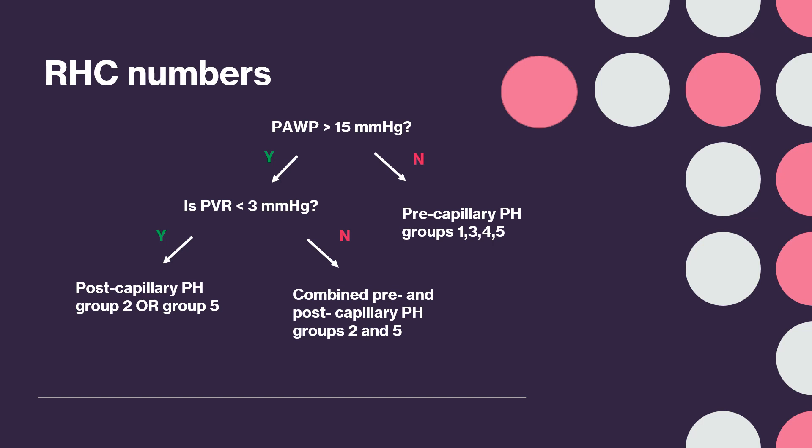If the mean pulmonary arterial pressure is less than 20, you do not have pulmonary hypertension. The next step is to look at the pulmonary arterial wedge pressure, or PAWP.